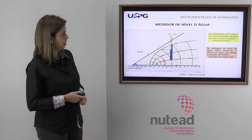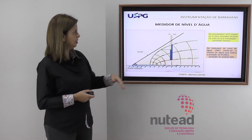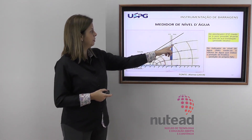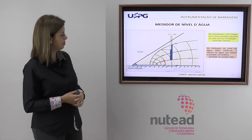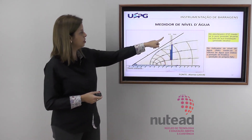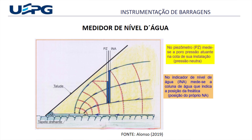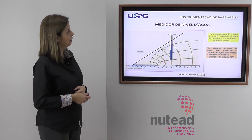Nessa figura temos a representação de uma rede de fluxo numa barragem de terra: de um lado um medidor de nível d'água, do outro lado o piezômetro. O medidor de nível d'água mede exatamente a coluna de água, dando a posição da freática. Já o piezômetro mede a poropressão atuante na cota de instalação, ou seja, a pressão da água.